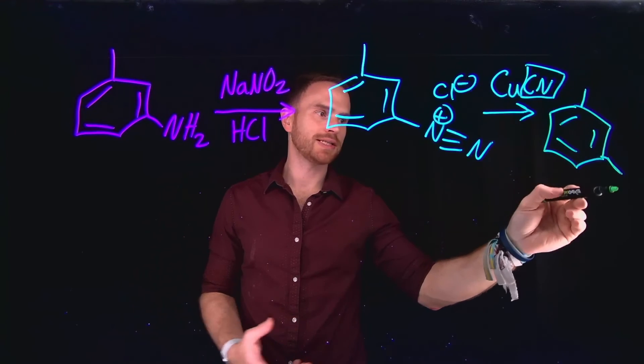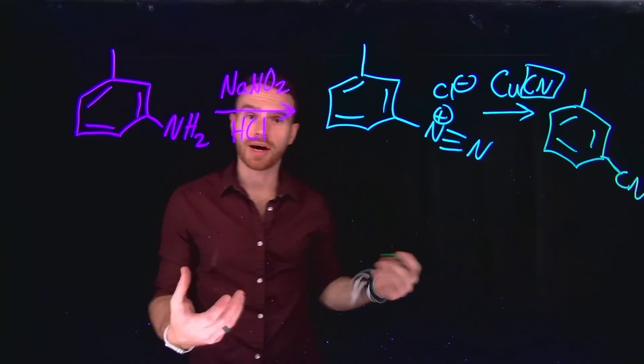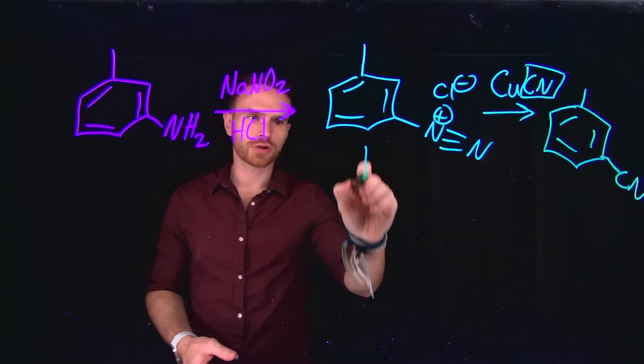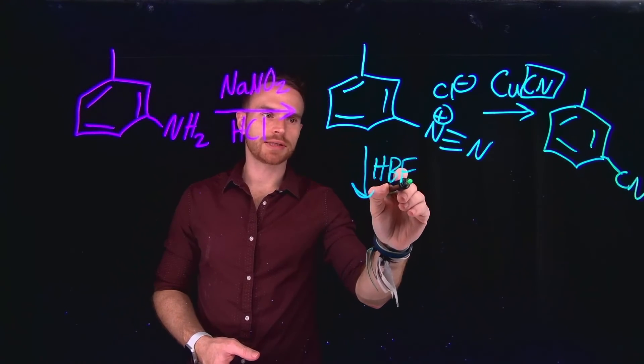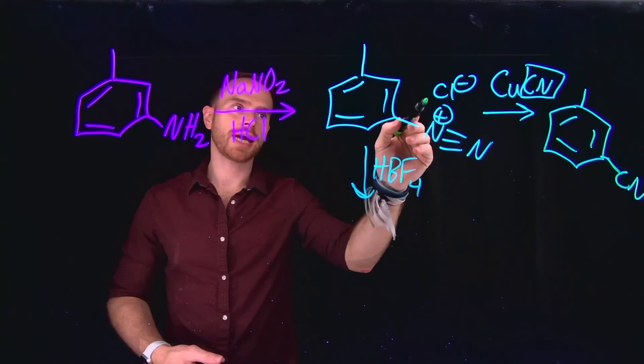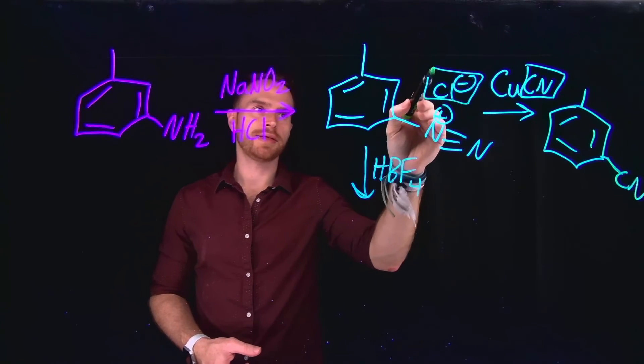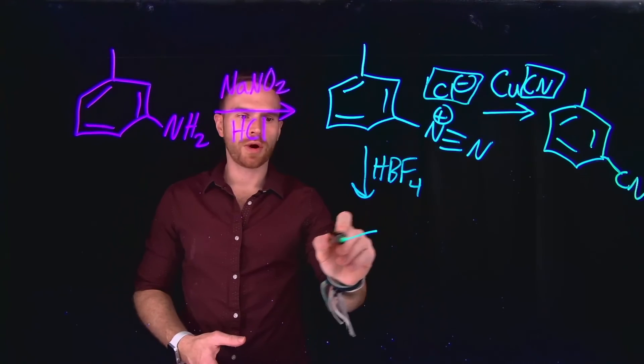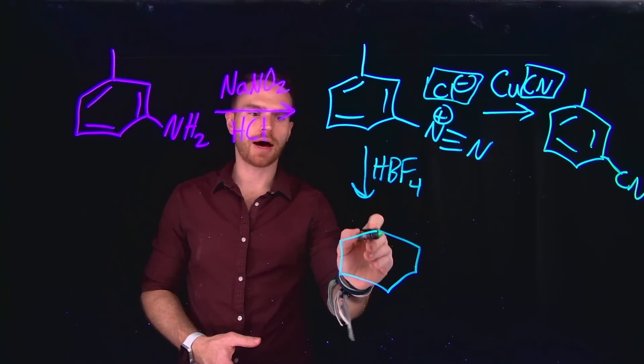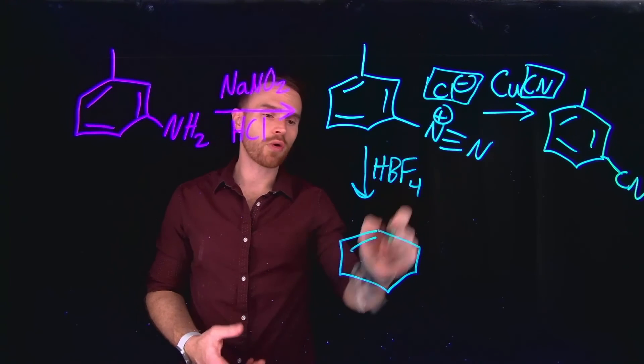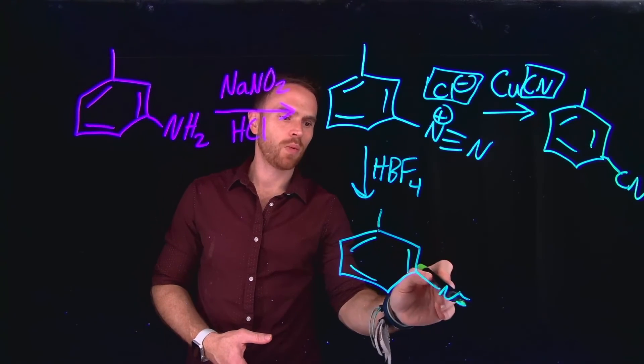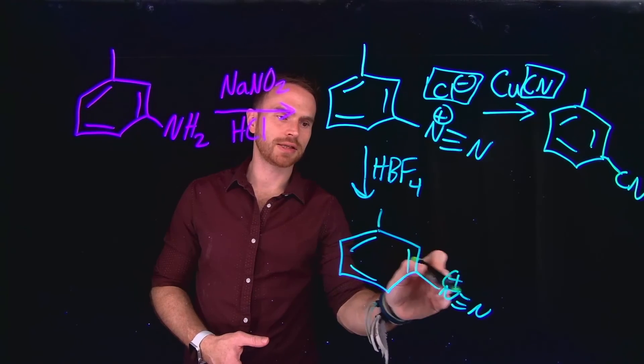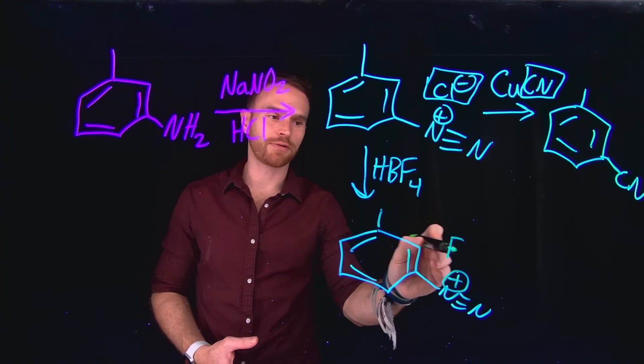Now going in the downward direction, you were told that you added HBF4. And this presents an intermediate where you exchange the ions in this reaction. It's called a salt metathesis reaction, where now instead of having the halide be the chloride, which was initially our diazonium salt, what you have generated instead is the counter ion is going to be a fluoride.